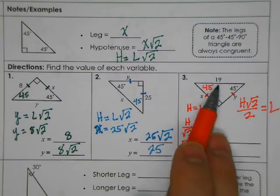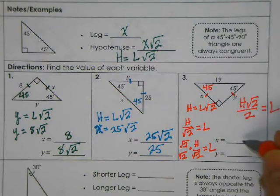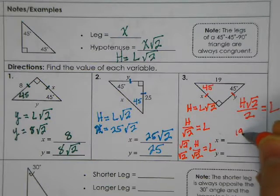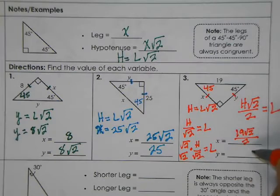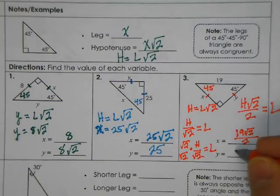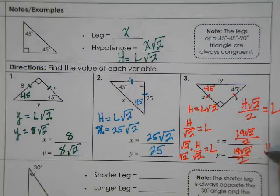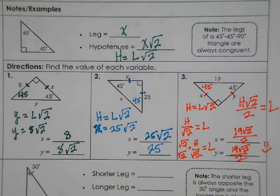On the top, the hypotenuse gets multiplied by the square root of 2, giving us hypotenuse times the square root of 2. On the bottom, the square root of 2 times the square root of 2 is just 2. So the length of the leg is the hypotenuse times the square root of 2 over 2. Substituting in the hypotenuse of 19, both x and y equal 19 square roots of 2 over 2.